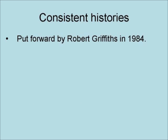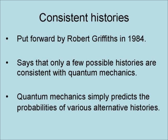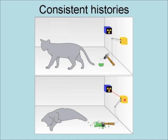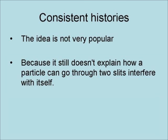The consistent histories interpretation of quantum mechanics was put forward by Robert Griffiths in 1984. It works backwards from the results of an experiment and says that only a few possible histories are consistent with quantum mechanics. As a result, quantum mechanics simply predicts the probabilities of various alternative histories. In the case of Schrödinger's cat, it is either alive or dead, but not both — quantum mechanics just gives the probability of which way it may be. The consistent histories interpretation is not very popular because it still doesn't explain how a particle can go through two slits and interfere with itself.